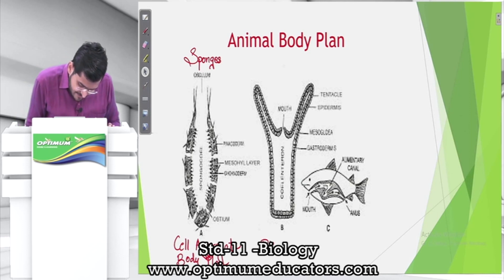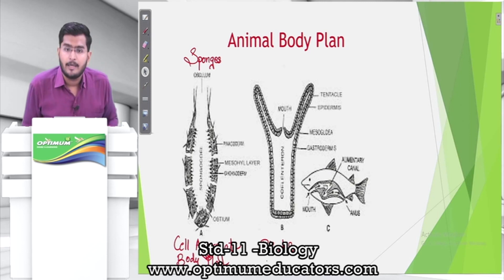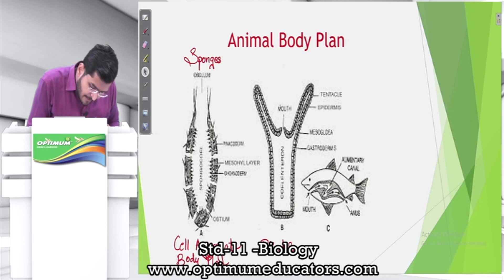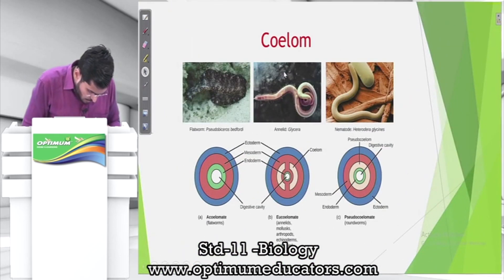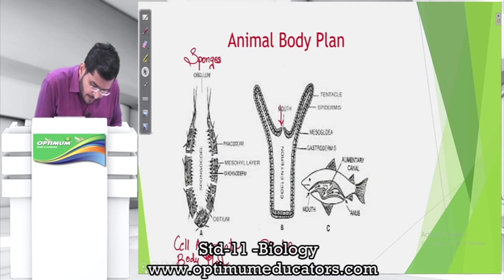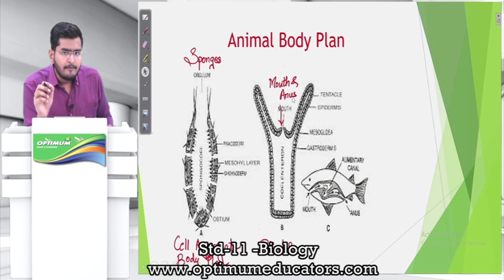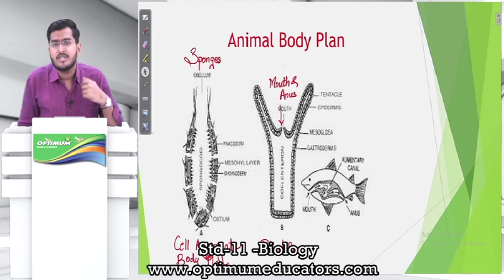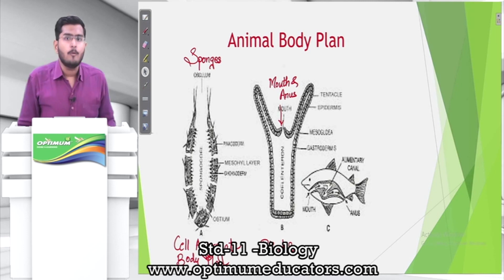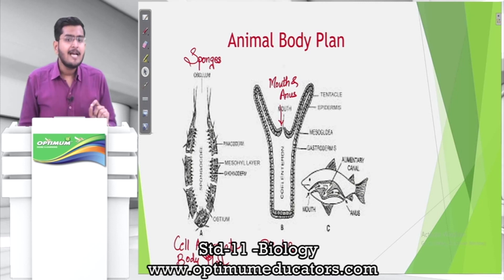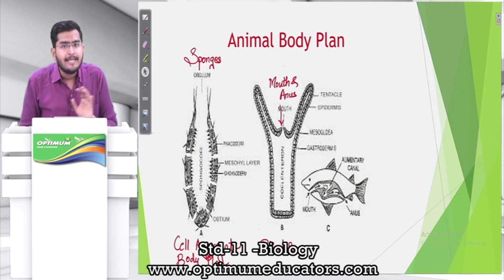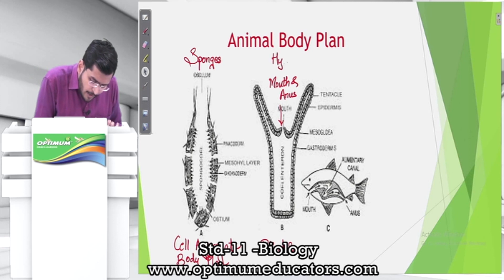The second type is the blind sac body plan. In this plan there is a common opening that functions as both mouth and anus — food is taken in through this single opening and waste products are also expelled through the same opening. This is called the blind sac body plan, and the best example is hydra.